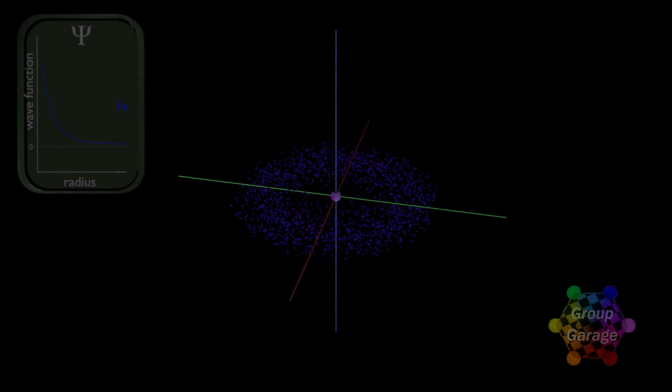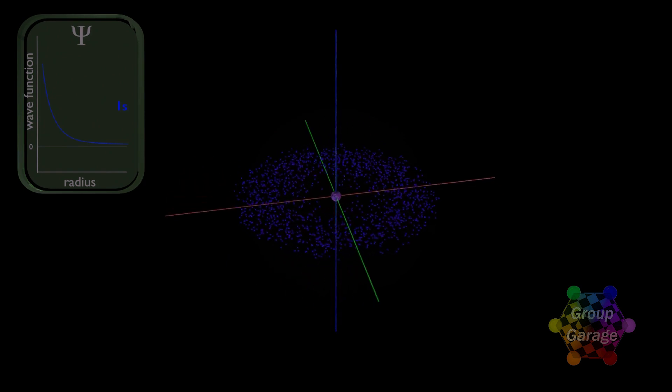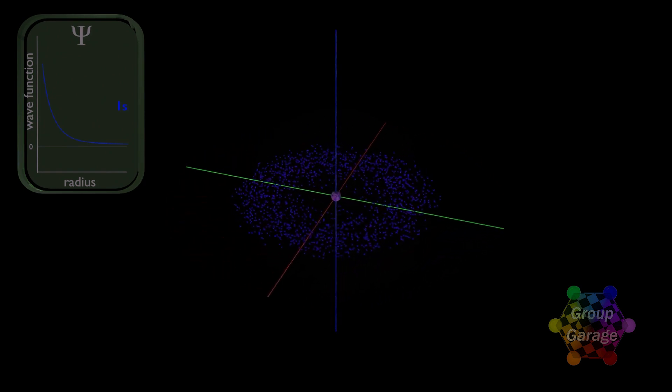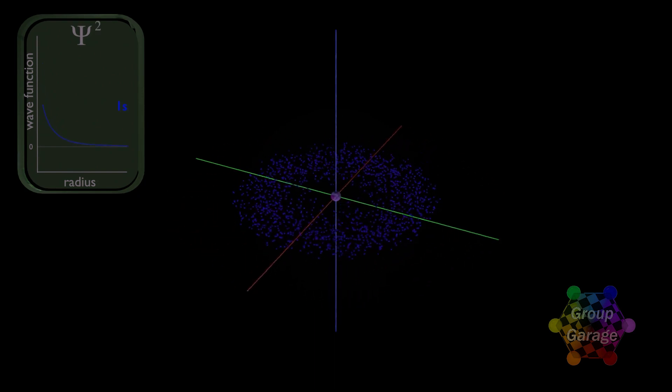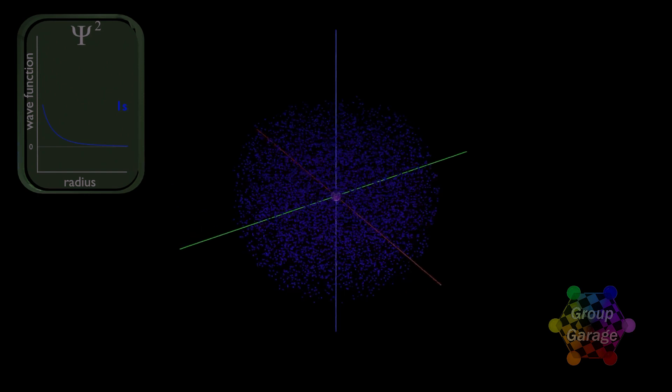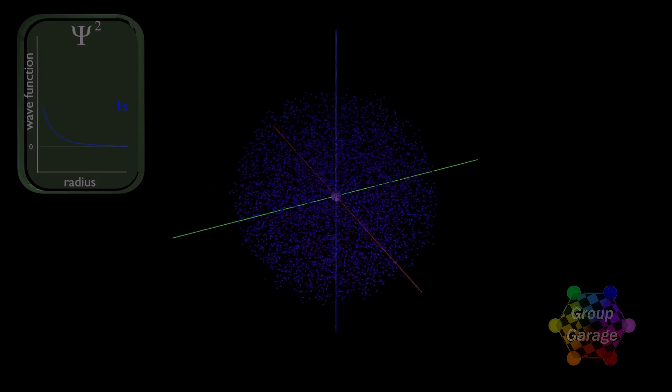To get here, we started with the wave function, a solution to the Schrodinger equation. And since Max Born had postulated that the electron density would be proportional to the size of this wave function squared, that's what we did. This squared wave function gives us the electron density, which for 1s is higher near the center and decreases as we move out along the radius.